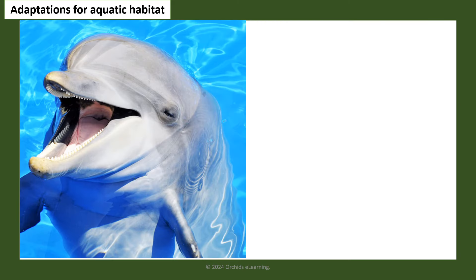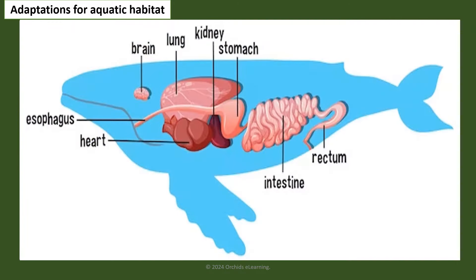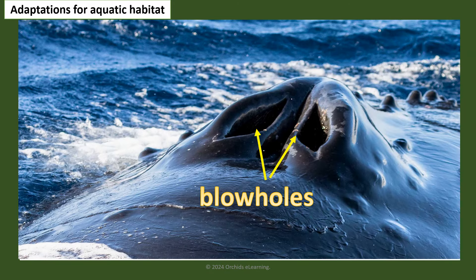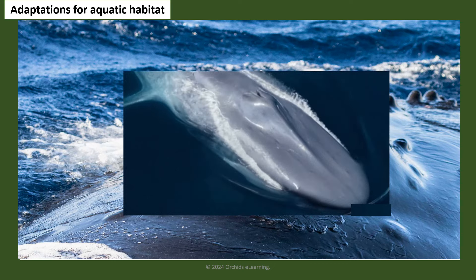Animals such as dolphins and whales do not have gills to breathe in water; they instead breathe through lungs. They have blowholes located at the upper part of their heads, and come to the water surface to breathe in air through blowholes from time to time.